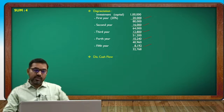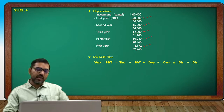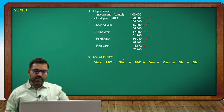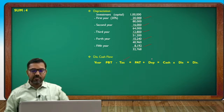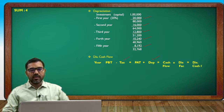Now I will go to discounted cash flow. In the discounted cash flow table, we have profit before tax. From profit before tax, I will calculate the tax. Tax is calculated and added back with depreciation to arrive at the cash flow, which leads to the discounted cash flow.